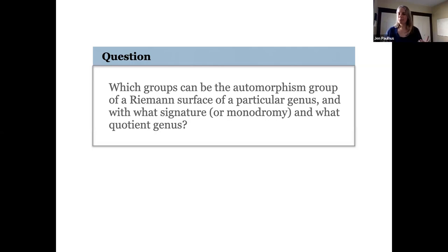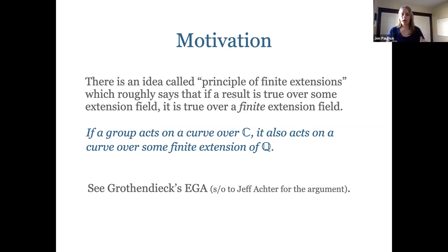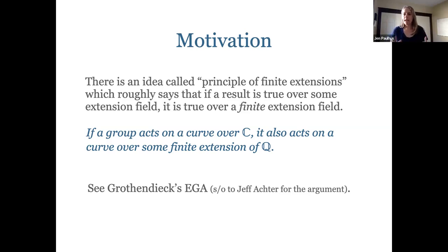I'm giving a number theory talk but I've basically talked about topology so far, so let me motivate this from a more number theoretic point of view. Riemann surfaces are over the complex numbers, but it turns out that when we have automorphism groups that act in the complex plane, we can really think of it as that group acting in some finite extension of the rational numbers. So we really can bring it down to questions about curves over number fields.